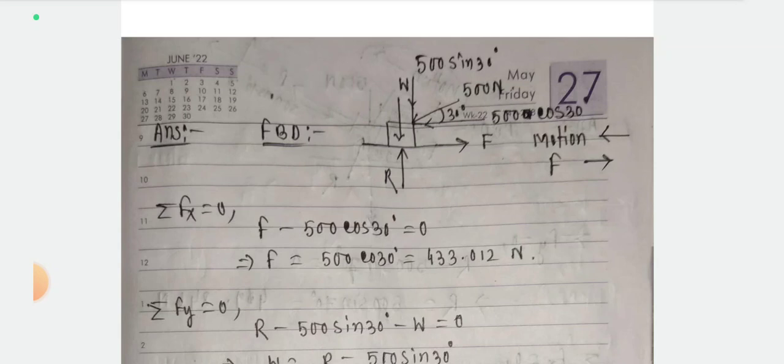Applying summation of Fy equals to 0 and summation of Fx equals to 0. From summation of Fx equals to 0: F equals 500 cos 30 degrees. The answer is 433.012 N. This gives us the frictional force value.